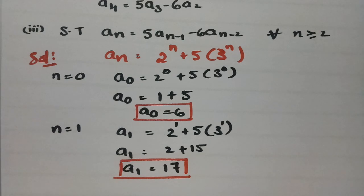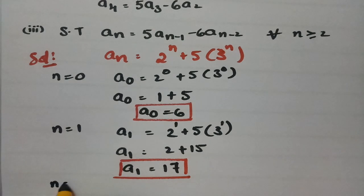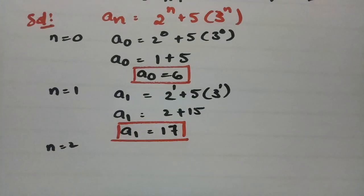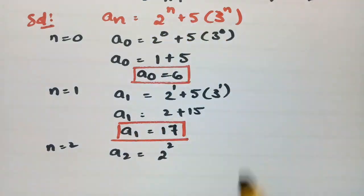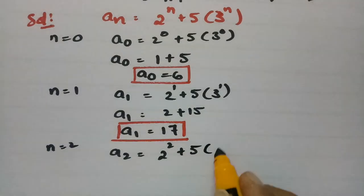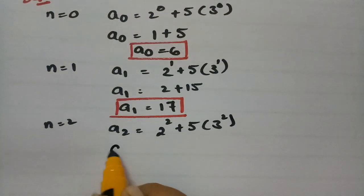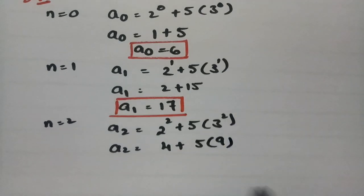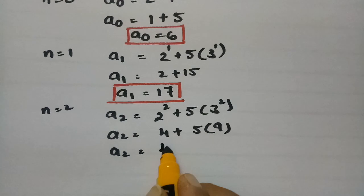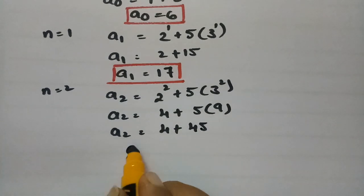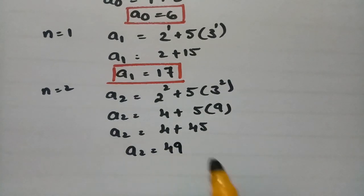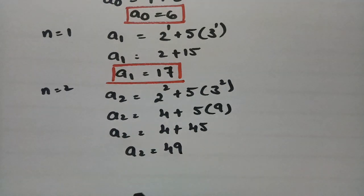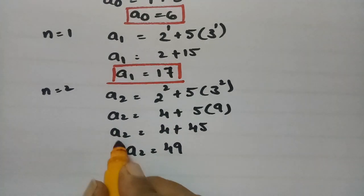For a_2, we put n equal to 2. So a_2 equals 2^2 plus 5 times 3^2, which is 4 plus 5 times 9, that is 4 plus 45. So a_2 equals 49.